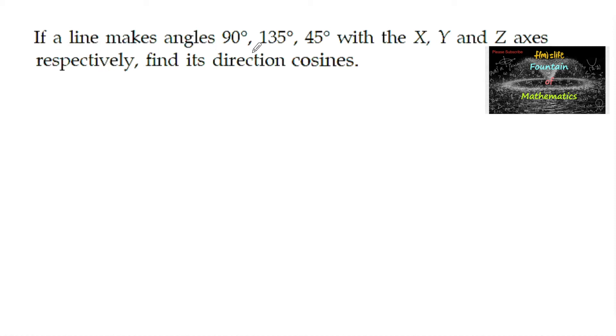If a line makes angles 90 degrees, 135 degrees, 45 degrees with the x-axis, y-axis and z-axis respectively, find its direction cosines.